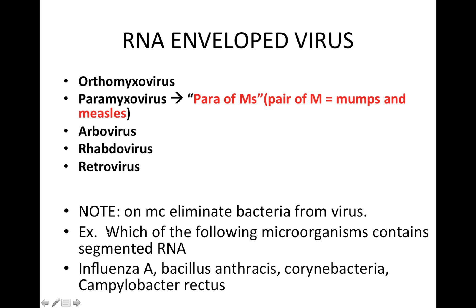For example, you might get a question that says: which of the following microorganisms contain segmented RNA? Your answer choices might be influenza A, Bacillus anthracis, Corynebacteria, and Campylobacter rectus. If you ask yourself which of these is not like the other, you see influenza A is not like the others because it's a virus and the rest are bacteria. That's a tip on how to approach some of these questions.